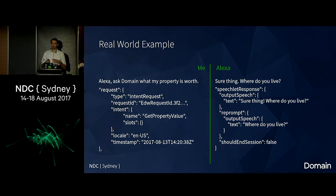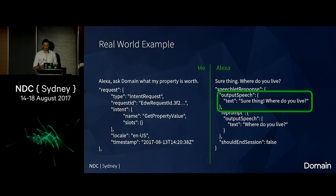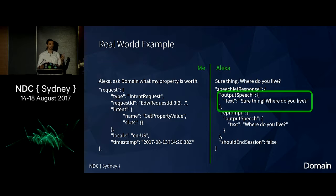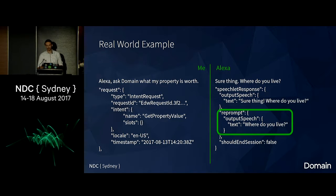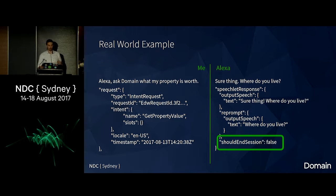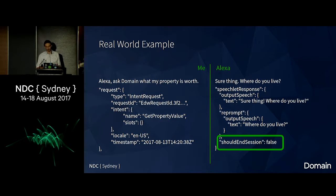So: 'Alexa, ask Domain what my property is worth.' — 'Sure thing. Where do you live?' Your API just has to return a small JSON object with the output speech text. After a few seconds with no reply, it'll ask again, and you as the developer can change the reprompt text slightly. The key field here is 'should end session' set to false, meaning the conversation is still going — we're not restarting from the beginning every time.